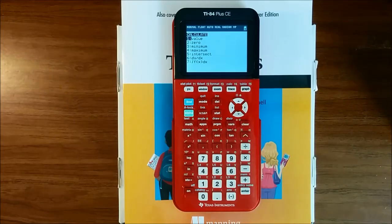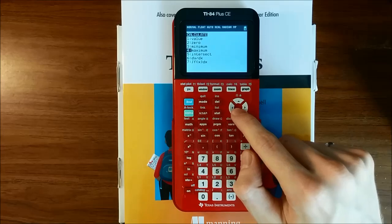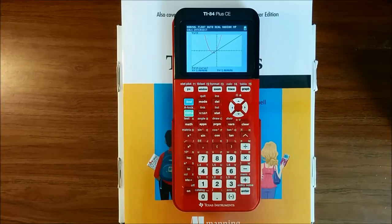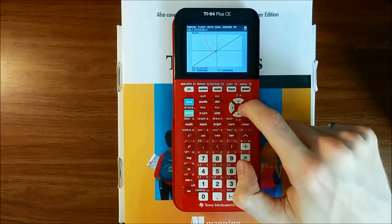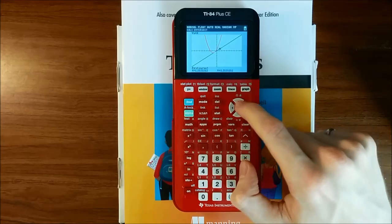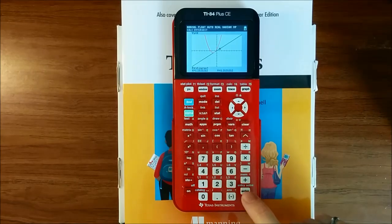To find the intersection of these two lines, let's move the cursor down to intersect and press Enter. The calculator will ask us which two graphed functions we want to find the intersection of. We only have two functions graphed, so notice we're on the blue line. Again, it's asking if that's the first curve, we'll do Enter for yes.